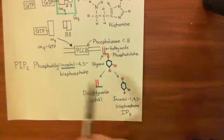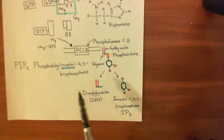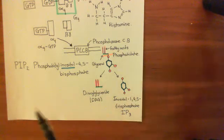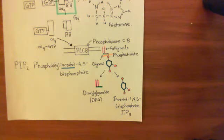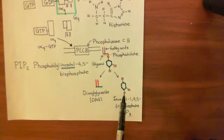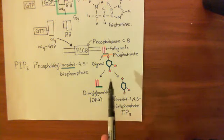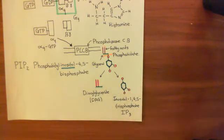Diacylglyceride has a very interesting role — it goes off and activates protein kinase C — but we're not interested in that. We're interested in the calcium signalling from this pathway, which is brought about by this IP3 molecule rather than the diacylglyceride molecule. So we're only going to care about inositol 1,4,5-trisphosphate.